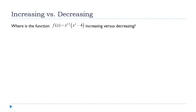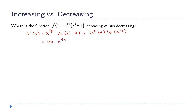We'll use the same approach for the next function, but there's going to be an unusual factoring step. To find f'(x) we use the product rule: x^(1/3) times the derivative of (x²−4), plus (x²−4) times the derivative of x^(1/3). The derivative of x²−4 is 2x, so we get 2x times x^(1/3), plus (1/3)x^(−2/3) times (x²−4).